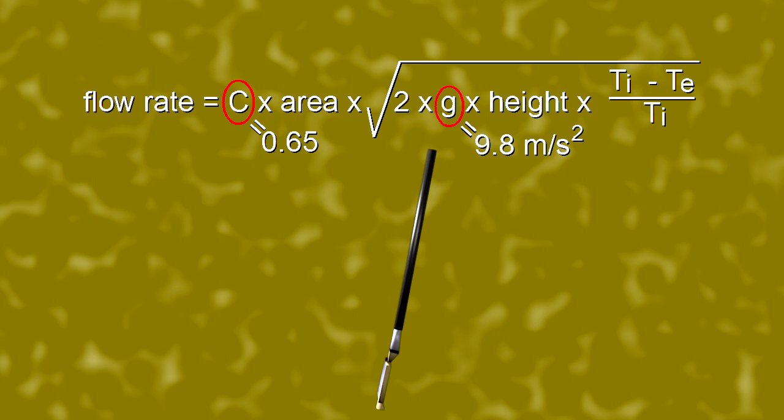C and G in the formula are constants, meaning their values are fixed and I have no control over them. Now the values I could experiment with are all being multiplied together. But do any have a larger effect than the others?